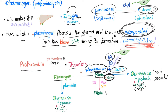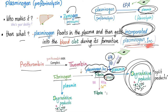Now plasmin is active — it's going to degrade fibrin into fibrin split products, and it will degrade fibrinogen into fibrinogen split products. Once the clot is formed, this plasminogen which is incorporated into the clot is going to be converted into plasmin, which turns around and eats the clot.